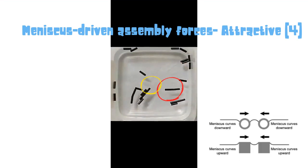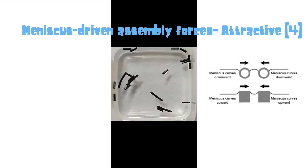Meniscus along the sides of the straws are upward and along the ends are downward. If the meniscus are in same direction, the straws are attracted towards each other. That's why you see either the sides of the straws or the ends of the straws are attracted together.